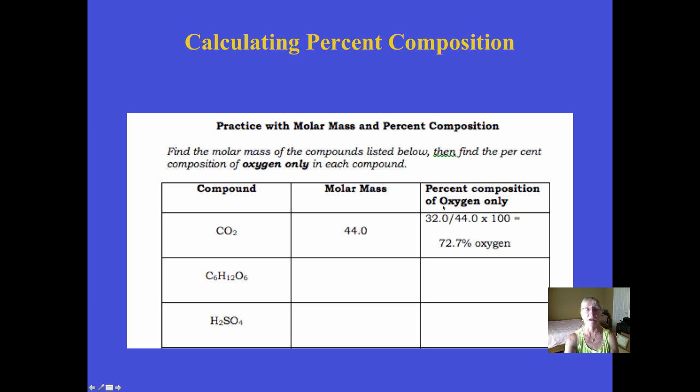It only wants the percent composition of oxygen over here on the far right hand side. I would say if you went to three sig figs or to the nearest tenth of a percent, that should be fine.